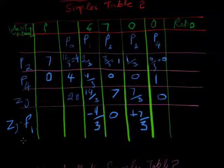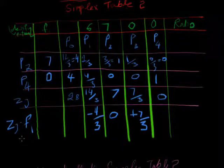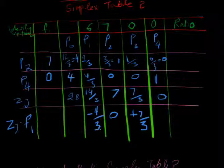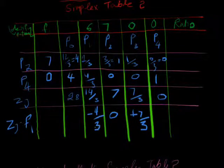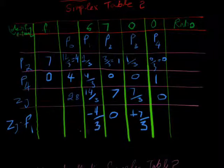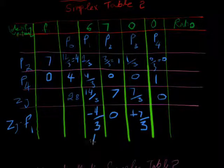Because ZJ minus F1 is negative, so we will make simplex table 3. And this is also the least.